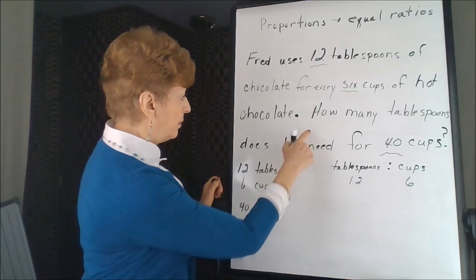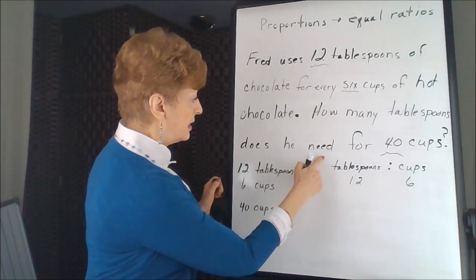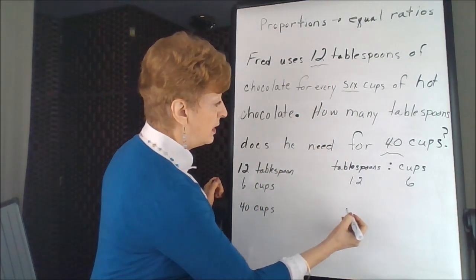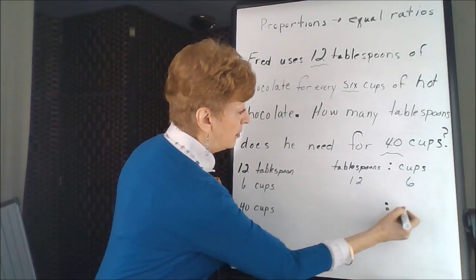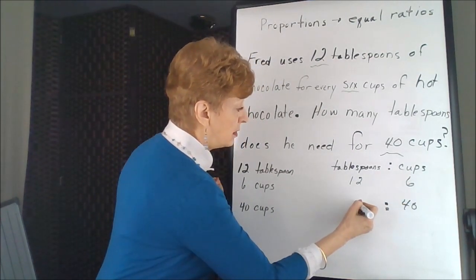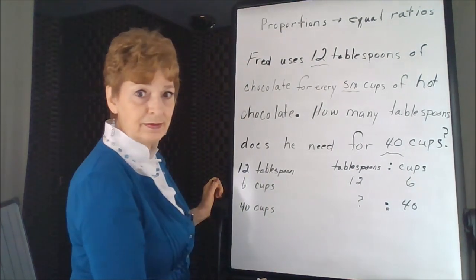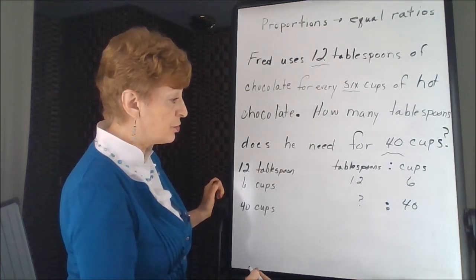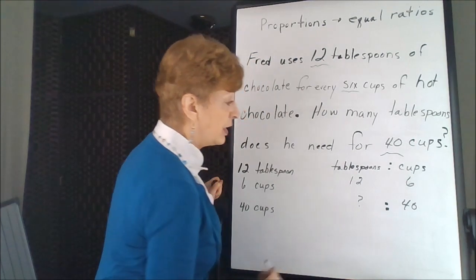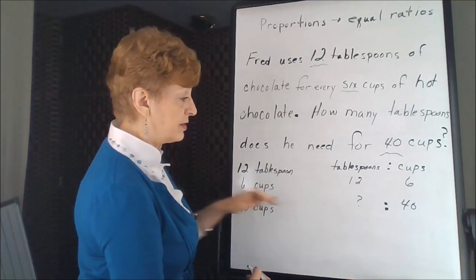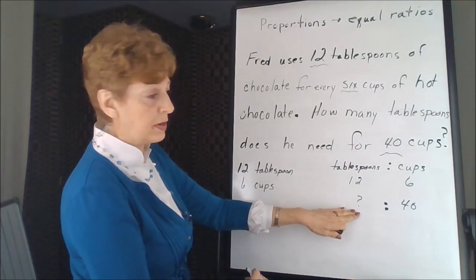And in the question, how many tablespoons does he need for 40 cups? Okay, so we've got 40 here, but we're clueless about that. That's what they're asking for. They shorted us the number. We don't have equivalent fractions here. We've got to decide what that number is going to be.